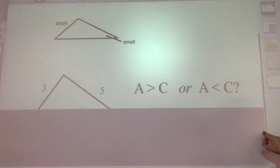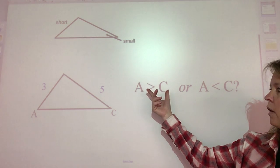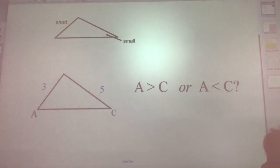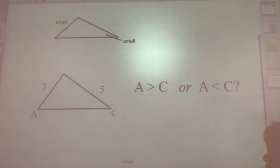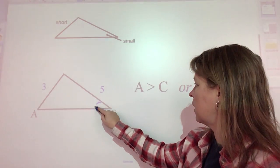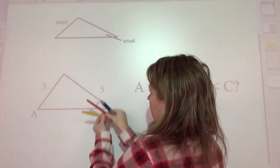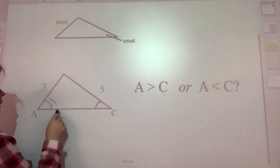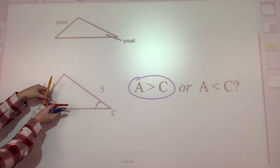The smallest angle will always be across from the smallest side. For example, angle A is greater than angle C because you look straight across — angle C has a smaller side across from it, while angle A has a bigger side across from it. The bigger the side, the bigger the angle.